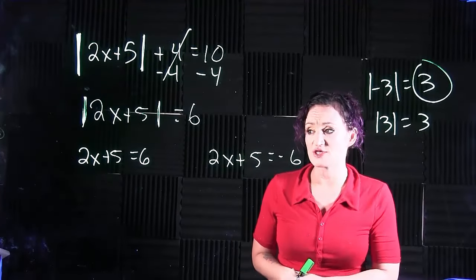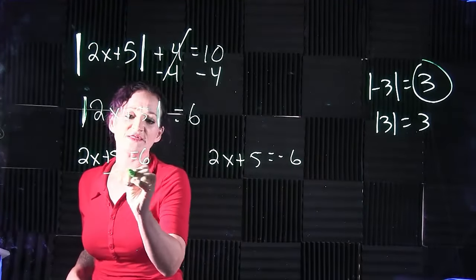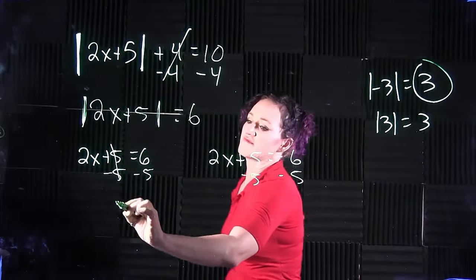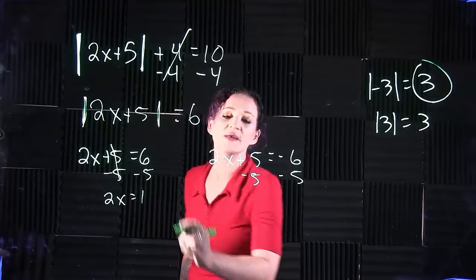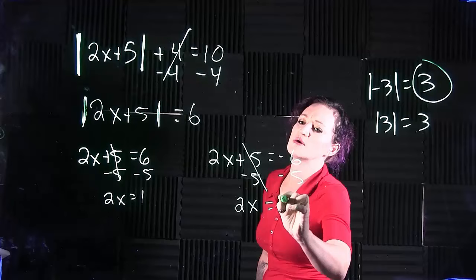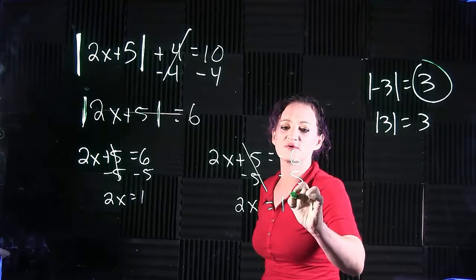Solve both of these equations. I like to solve them at the same time. I'm going to subtract 5 on either side. Subtract the 5 to get 2x is equal to 1, or subtract the 5 over here to get 2x is equal to negative 11.